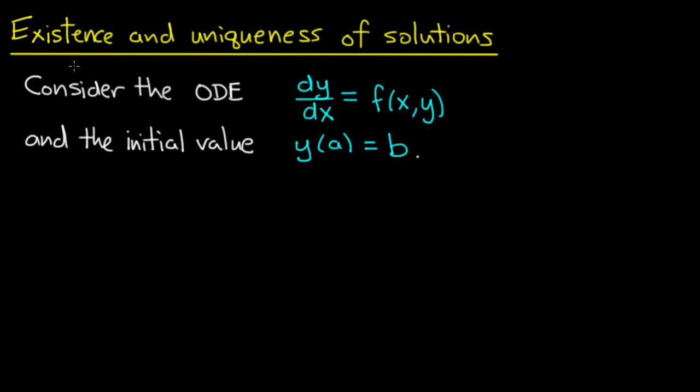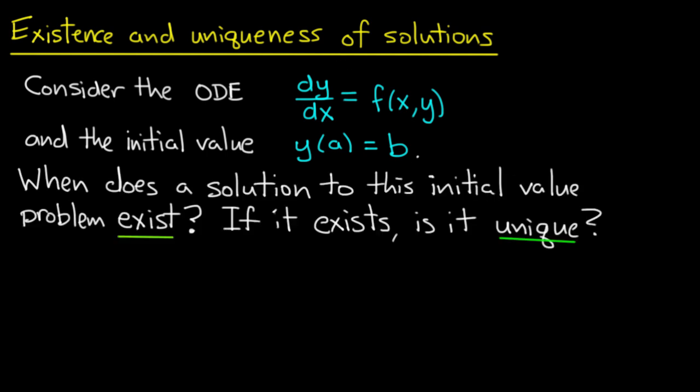So the existence and uniqueness of solutions is an important thing to study in order to both solve problems and make predictions. The main question is this: if I have an initial value problem like this, when does a solution to the initial value problem exist? And if it exists, is it a unique solution?